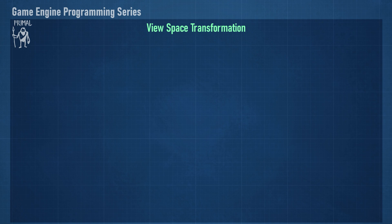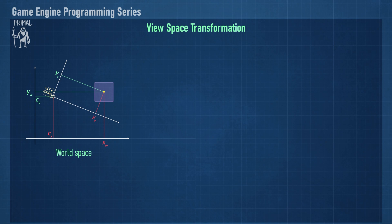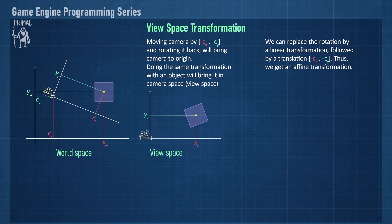We start with the view space transformation. When looking at the objects in world space using a camera, which itself has a position within the scene, we can define another coordinate system with the camera at its center. We can then give each object new coordinates with respect to the camera's coordinate system. We can do this by constructing a transform matrix that reverses the camera position and rotation, and applying that transformation to each object in the scene. Instead of messing with rotations, we can construct this matrix more directly using a linear transformation followed by a translation to get an affine transformation.